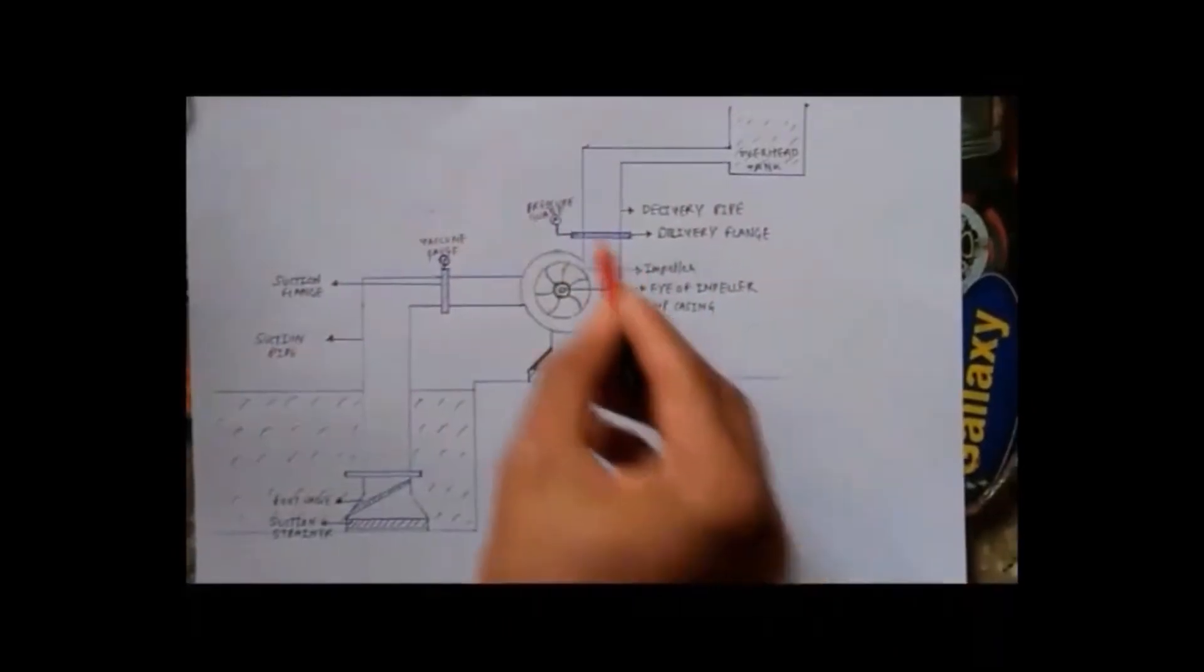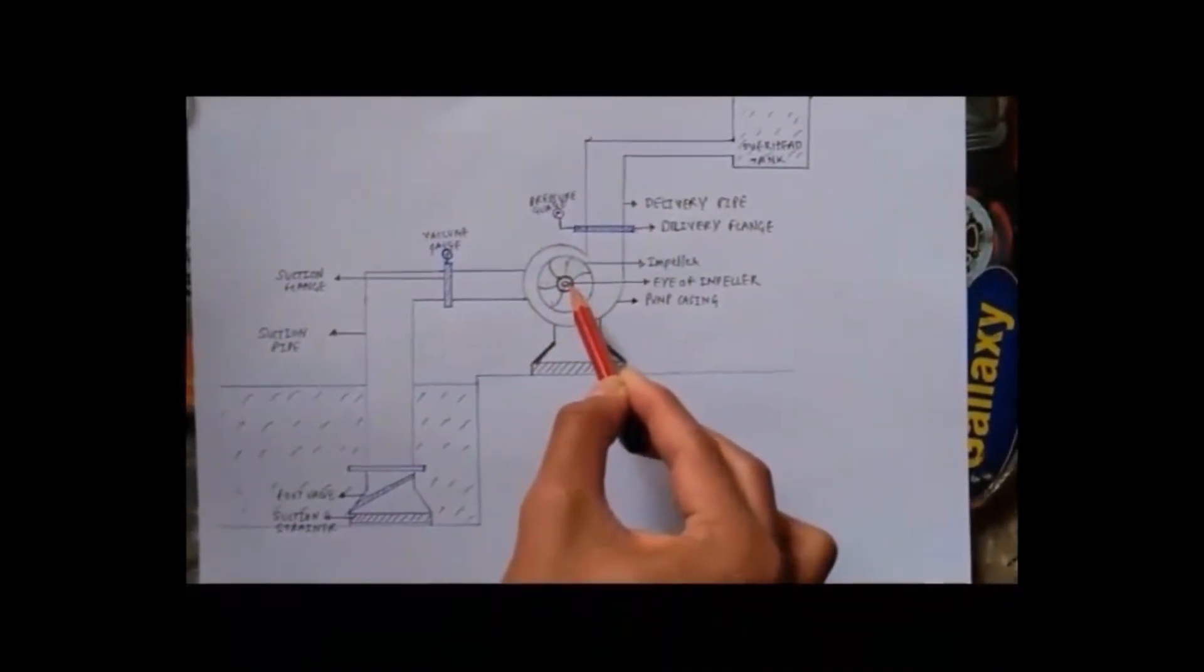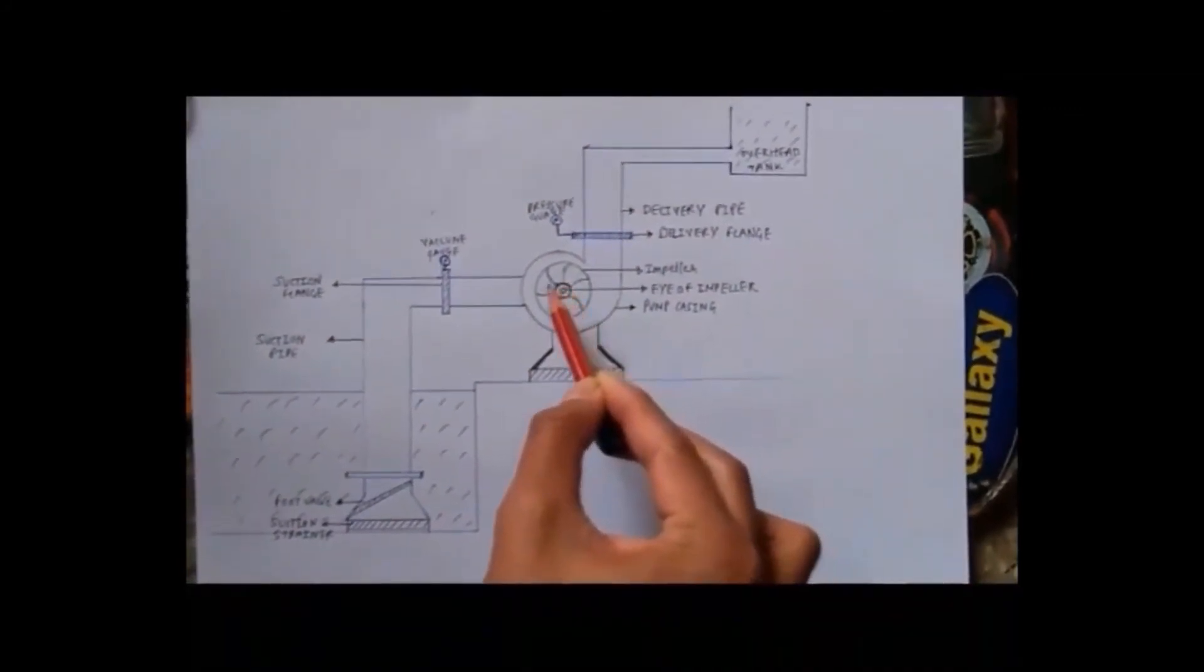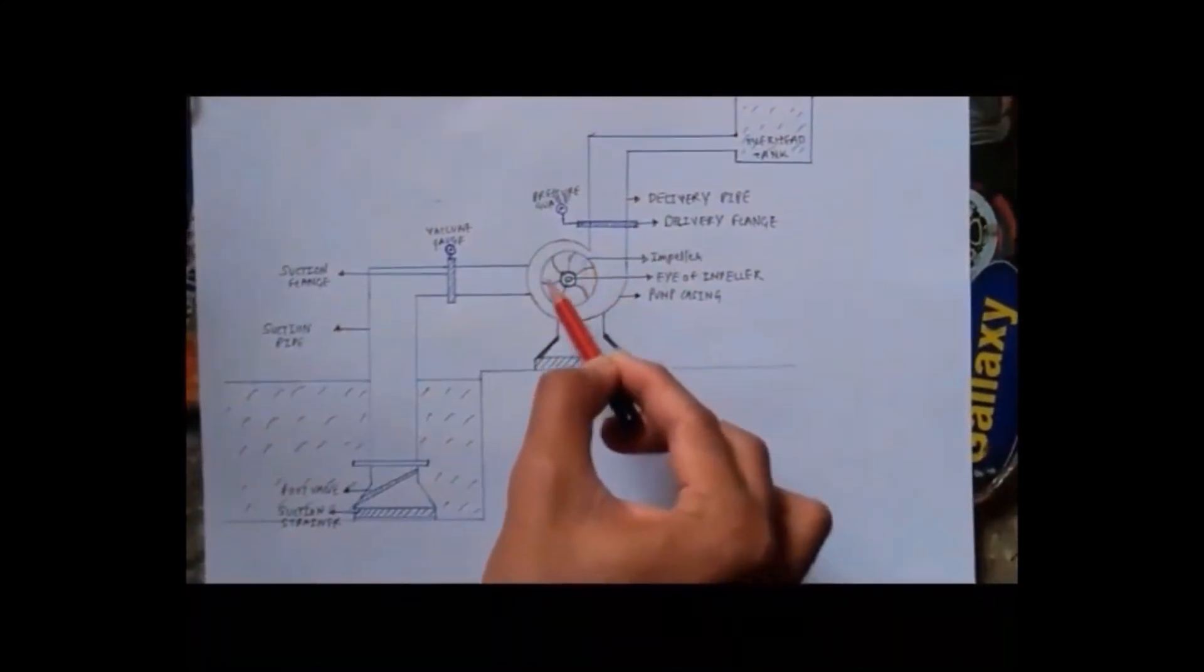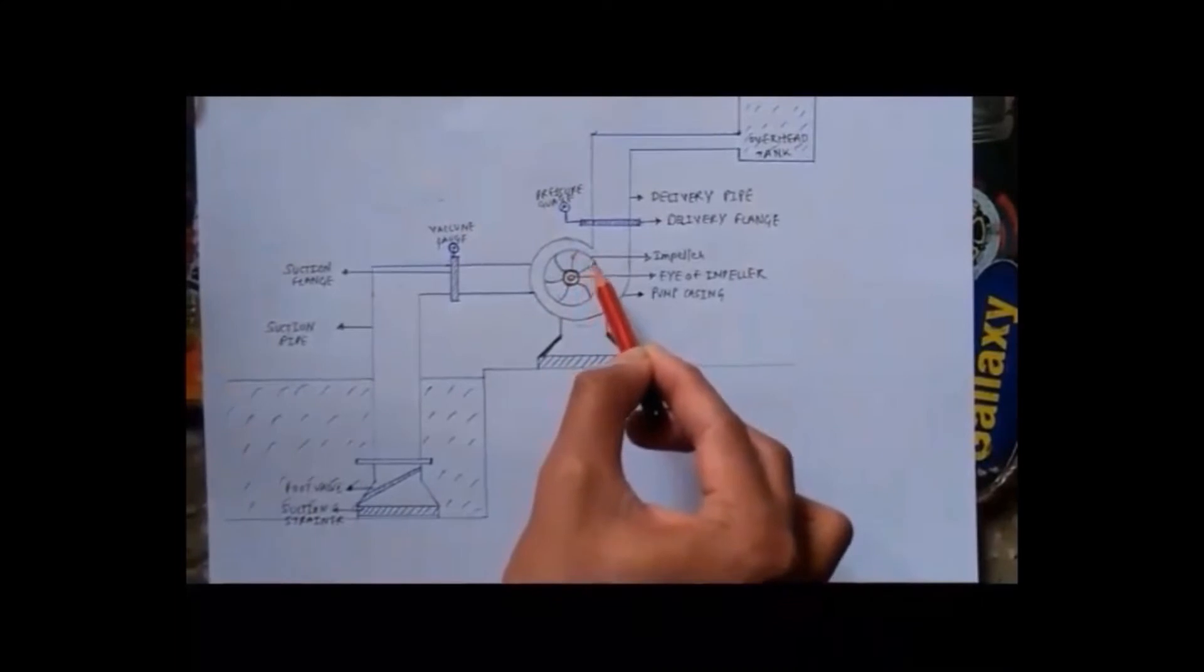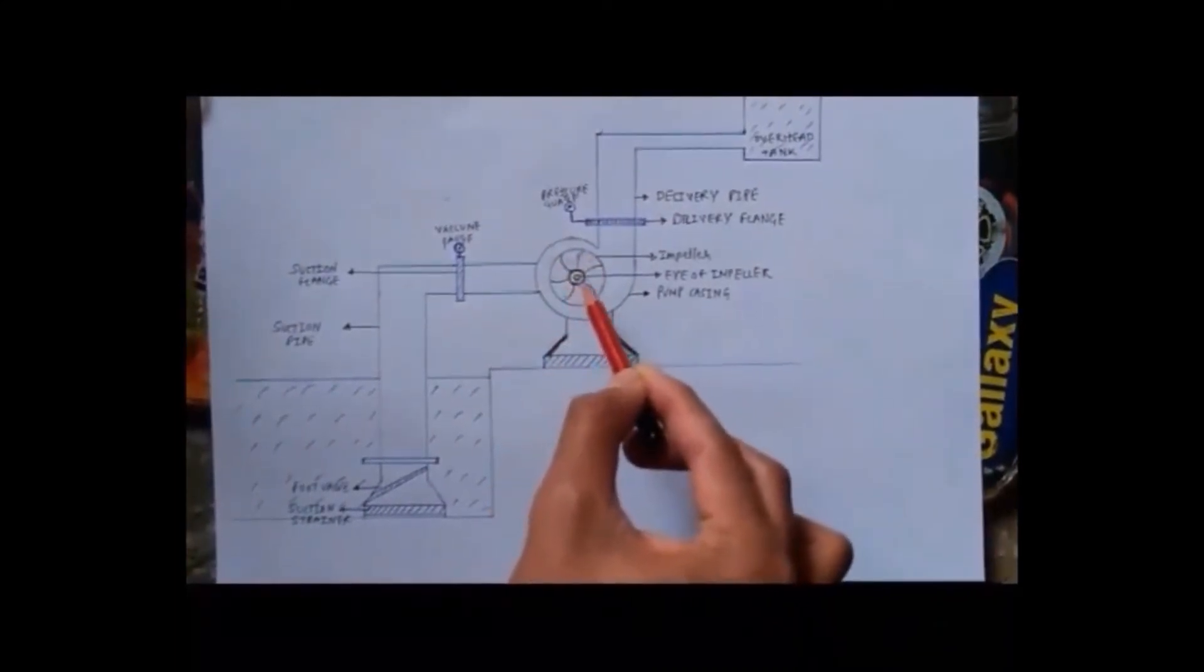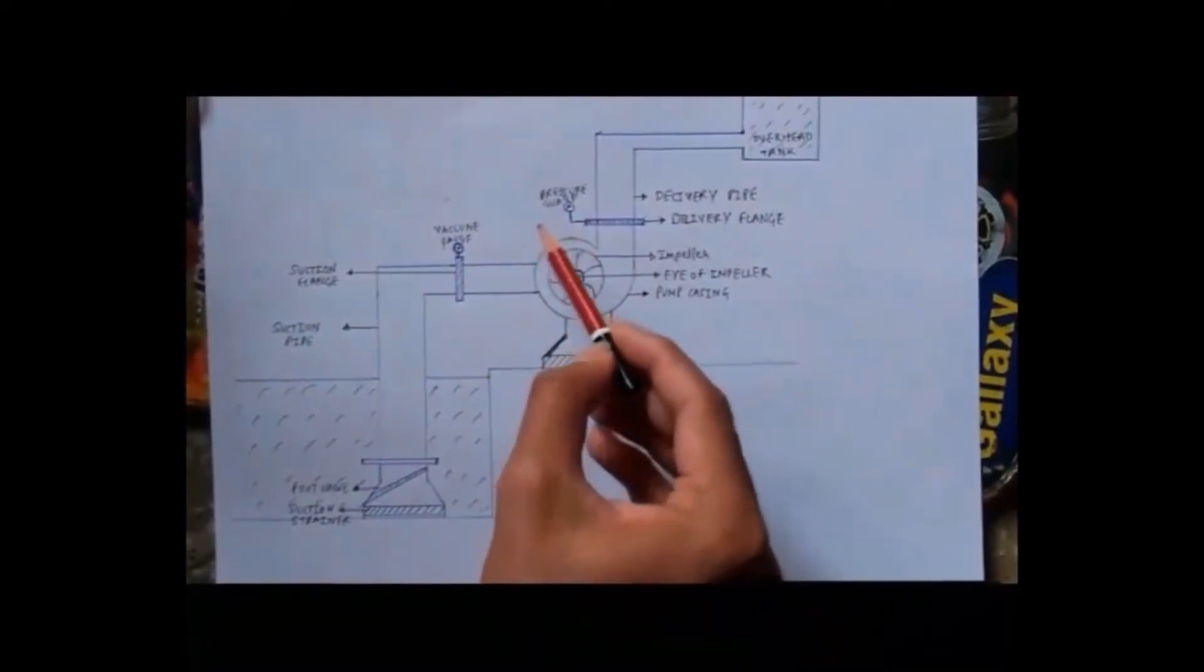Now let's focus on the centrifugal pump. As we can see, the eye is located at the centre of the impeller, so water reaches there first. Then it goes to the impeller. These are the vanes of the impeller, and it is distributed towards the casing. This is how the initial travel happens.